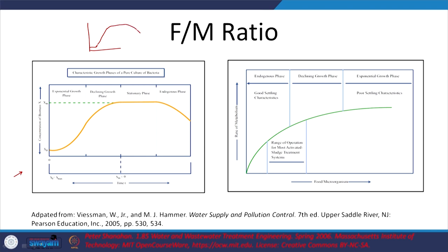This is the characteristic growth phase of a pure culture of bacteria. Substrate is somewhere out here and is being consumed — food decreases over time. On the y-axis we have concentration of biomass or microbes; on the x-axis we have time, along with information about substrate available.